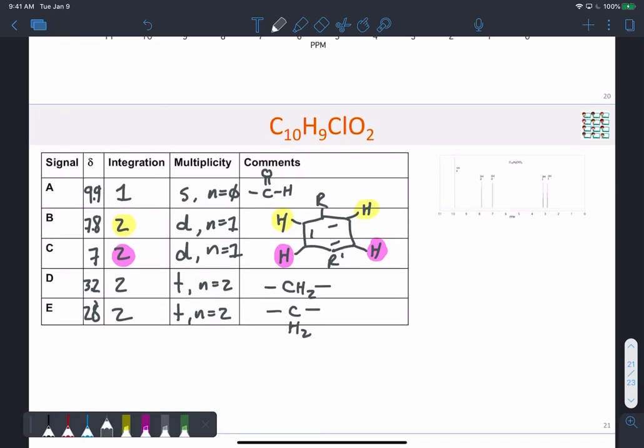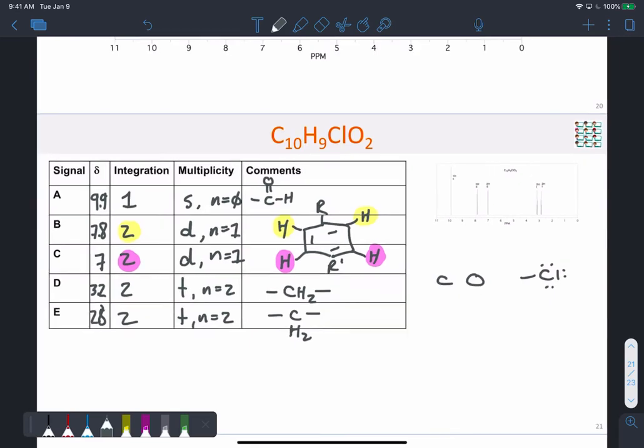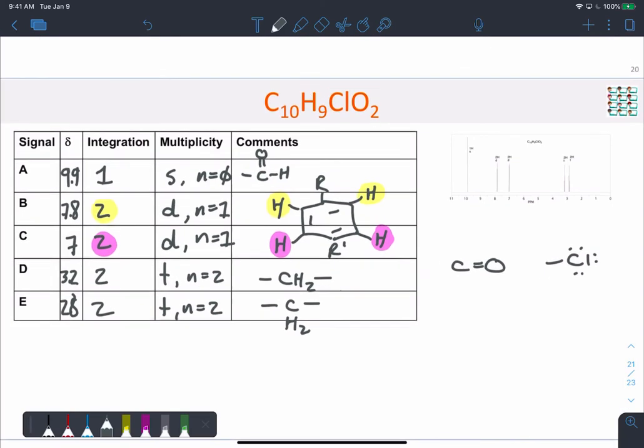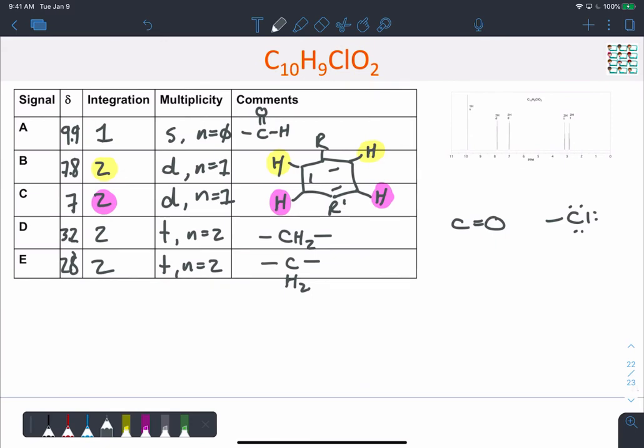All right, so we've got a whole bunch of this figured out. We are still missing, so let's count it up and compare it to the formula. So we have 6, 7, 8, 9. We need one more carbon atom. We need one more oxygen atom. We need the chlorine. There's only one way to have that. And we need another degree of unsaturation. So quite likely that it's going to be a carbonyl. We could maybe think about something like an epoxide as well, or another kind of a ring, possibly.